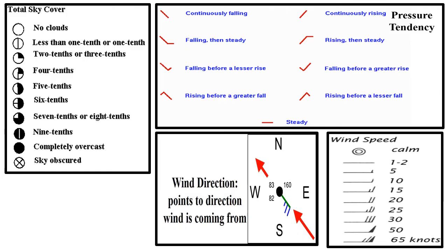The symbols for total cloud cover can be found in the upper left-hand side of the slide. For example, if the sky contains no clouds, an open circle will be used. Next to cloud cover are the symbols for pressure tendency. For example, if the pressure is steady, a horizontal line will be used.